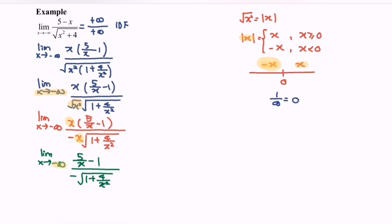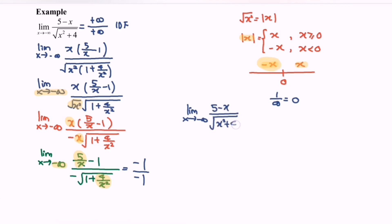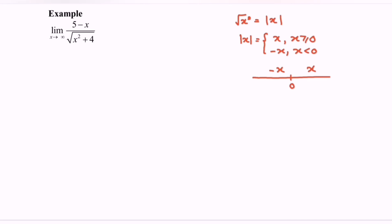Please take note of the key rule: if we have 1 over infinity we obtain 0. So substituting negative infinity, the term 5 over x gives 0 and 4 over x squared gives 0. This yields negative 1 in the numerator and negative 1 in the denominator as well. As a conclusion, the limit when x approaches negative infinity for the function (5 minus x) over the square root of (x squared plus 4) equals negative 1.